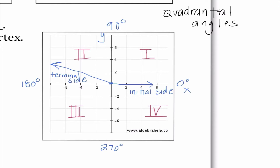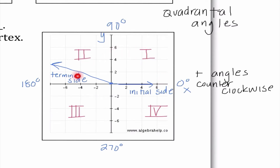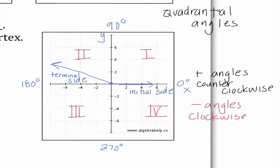The second thing I want to talk about are positive and negative angles. Whenever we have a positive angle, that goes counter-clockwise — we move into quadrant one, then quadrant two, then three, then four. Positive angles always move counter-clockwise. Negative angles, on the other hand, move clockwise. So if we're starting on the positive x-axis, I would go to quadrant four, then three, then two, then one. So all that the positive or negative sign tells us is the direction that our angle is heading.